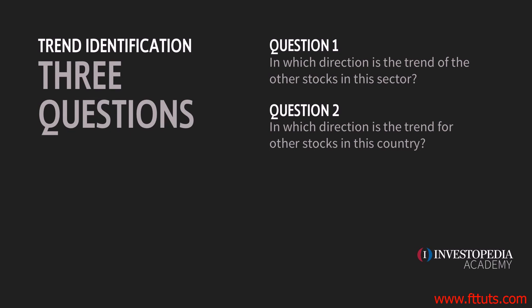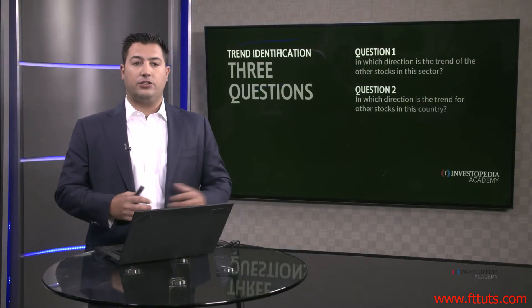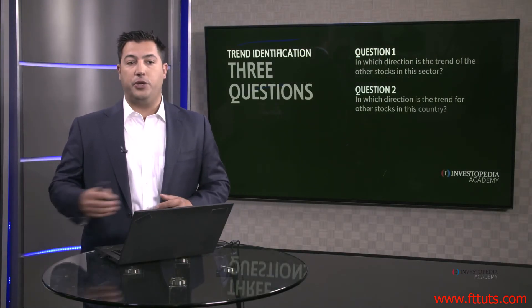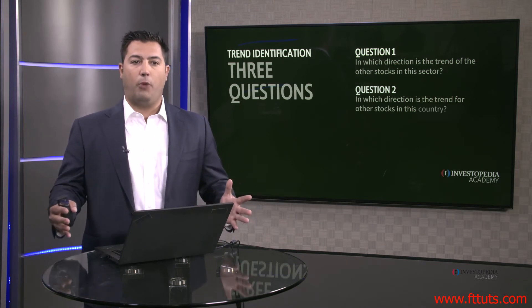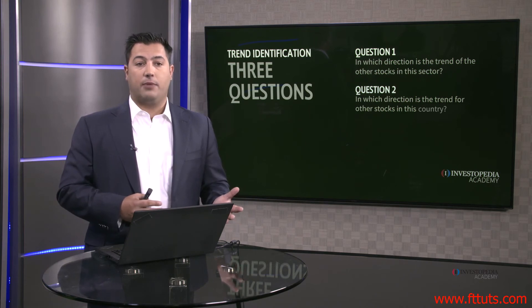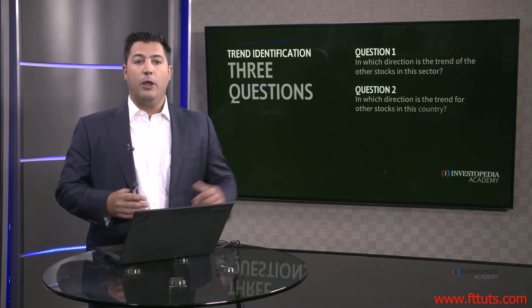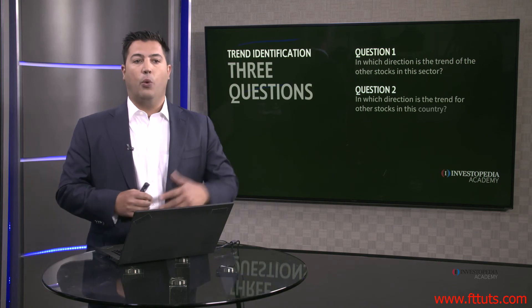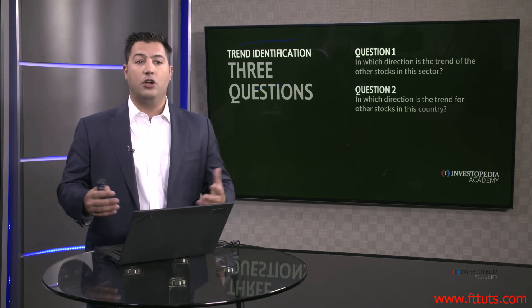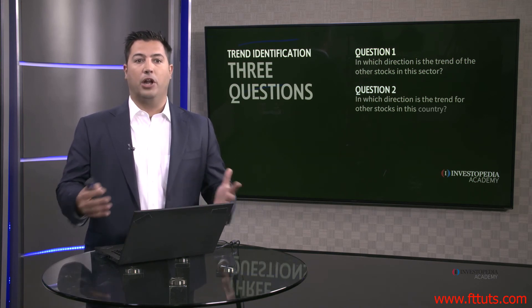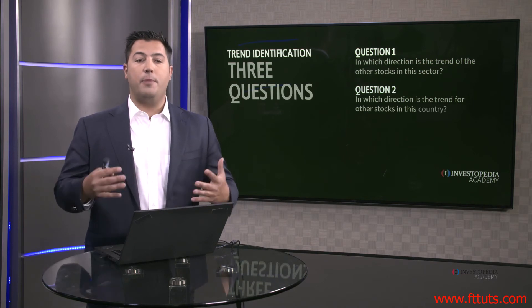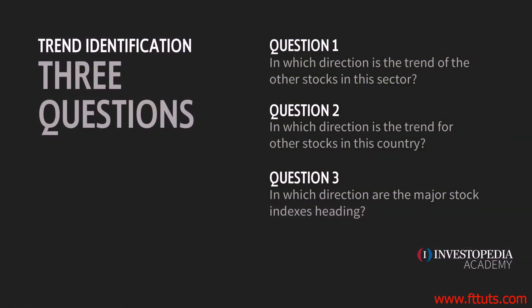The second question we want to ask is: in which direction are the stocks for the overall country doing? While we're looking at tech stocks, we want to know what the rest of tech is doing. If we're looking at energy, we want to know what the rest of energy is doing. Now we want to take it one step higher and see what the rest of the market is doing. If we're looking at a US stock like Exxon or Apple, what is the S&P 500 doing? What is the Dow Jones Industrial Average doing? Are they making higher lows and higher highs above an uptrend line, or making lower lows and lower highs below a downtrend line? We want to be in the direction of the overall markets.